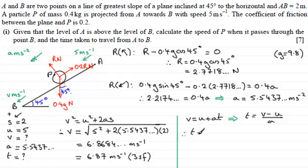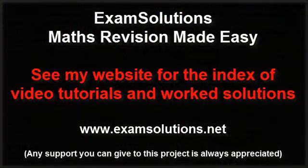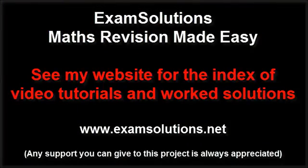So if we substitute our values in, we've therefore got that t equals v, which we've just worked out here. Let's take the unrounded version though, so that we don't have any rounding errors. So 6.8684 and so on minus u, which was 5, and divide this by the acceleration, which we've got up here, as 5.5437 and so on. And if you work this out, you end up with 0.3370 and so on. And if we give this to three significant figures, it's going to be 0.337 seconds to three significant figures. Thank you.